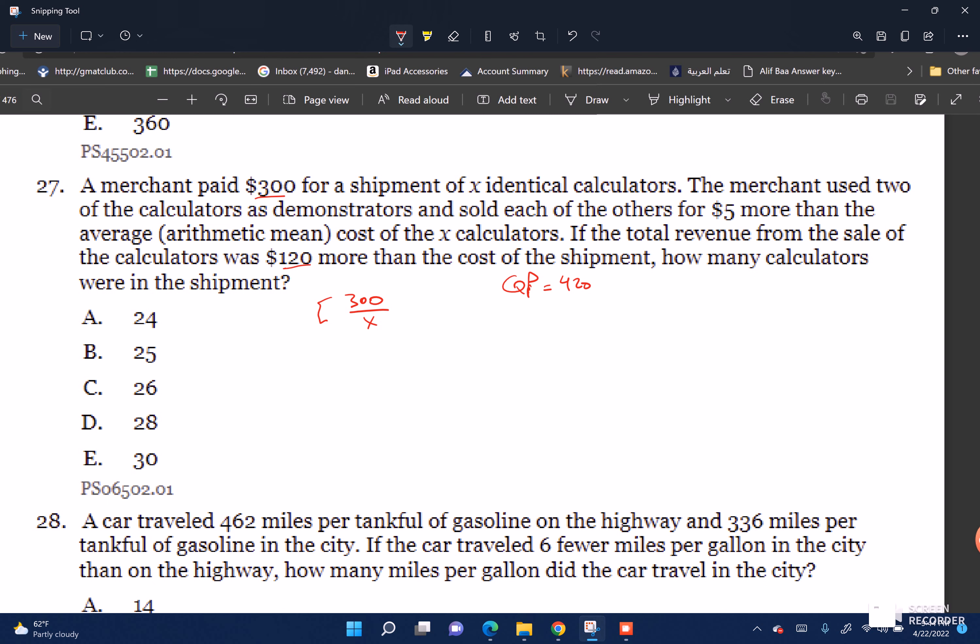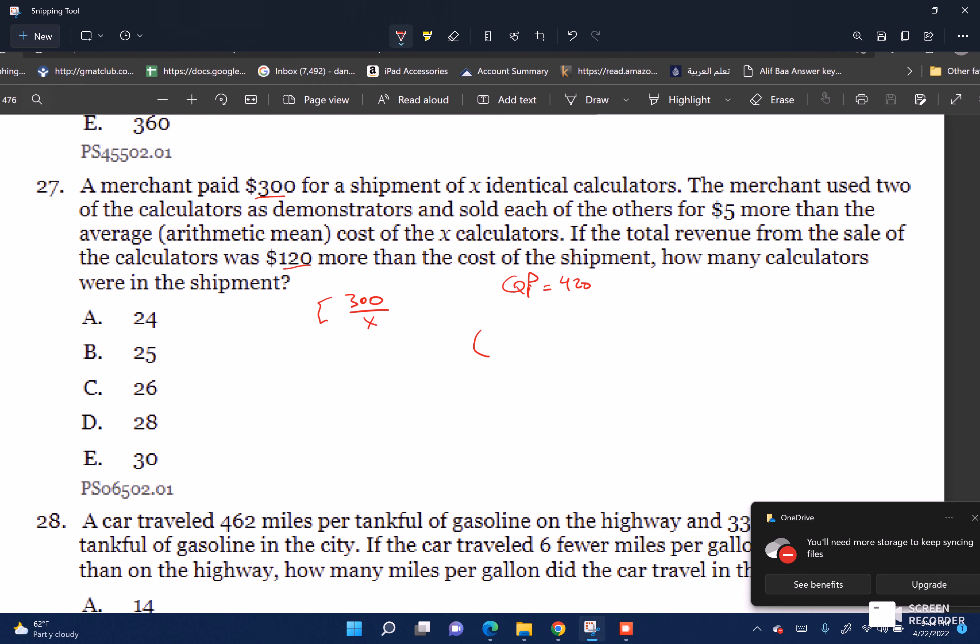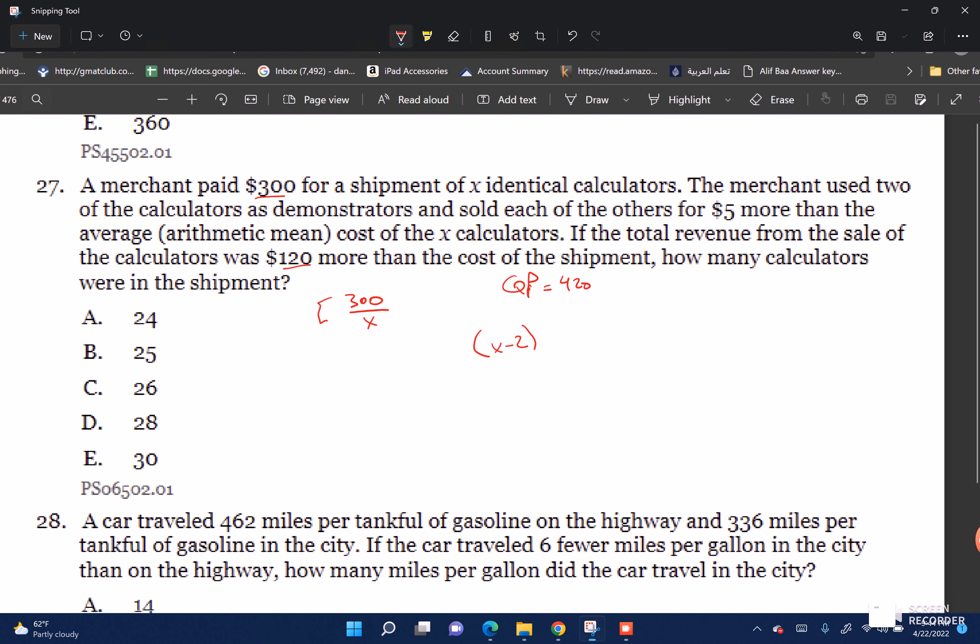They had X calculators but used two as demonstrators, so the number of calculators they sold was X minus 2. They sold that at a price that was $5 more than the average. The average was 300 over X, so that's plus 5, to equal 420.